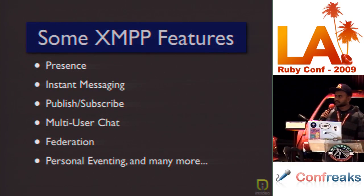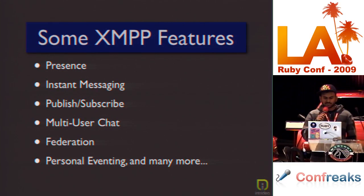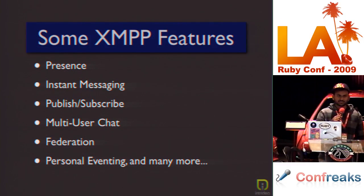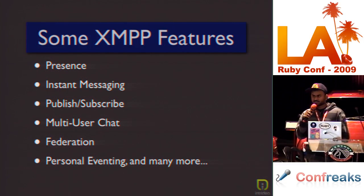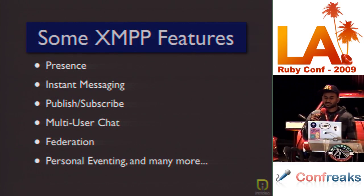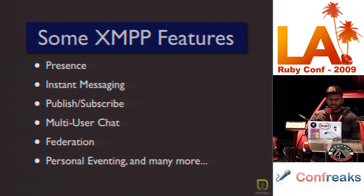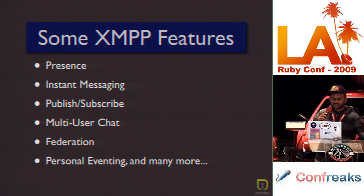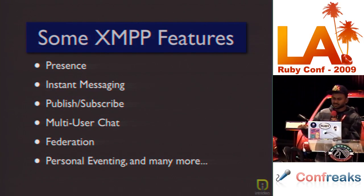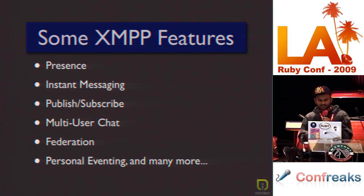Some XMPP features — you can find a big list on XMPP.org. The first and most important is presence: you can tell if somebody's connected or not, which removes a lot of overhead. Publish-subscribe is when you post something to a node and everybody who subscribes gets it almost instantly. Multi-user chat — for example, if you participate in one of those conference rooms. Federation lets you connect to various XMPP servers and talk to people on other servers. Personal eventing is, for example, when you switch songs in your music player and it instantly changes what you're playing across the network.